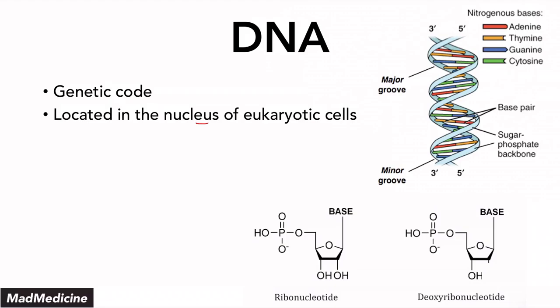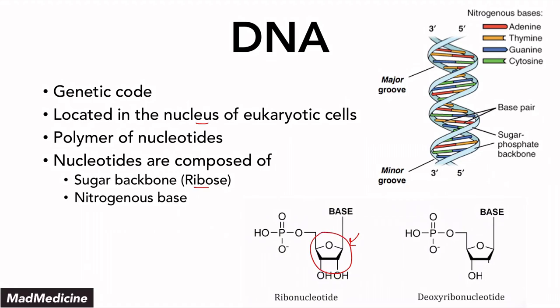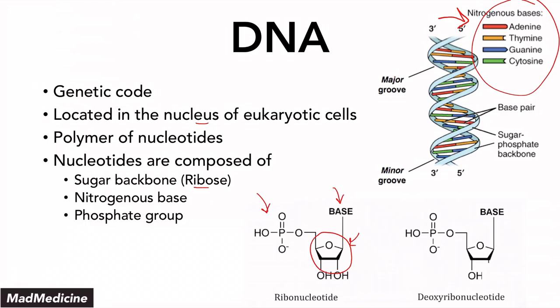When it comes to DNA, it consists of a polymer of nucleotides that are composed of essentially a sugar backbone, which consists of a ribose sugar. It also has a nitrogenous base, and depending on the type of base it is, it will determine which type of nucleotide you have. These are your nitrogenous bases in the top right-hand corner. Then you also have a phosphate group, and that is going to create your DNA structure.